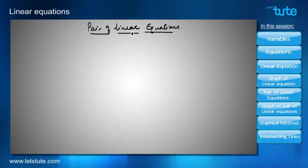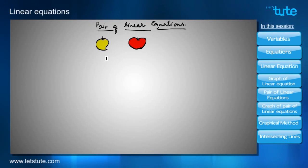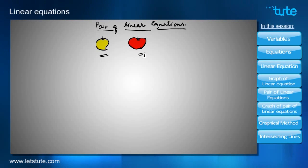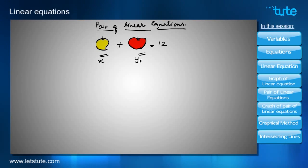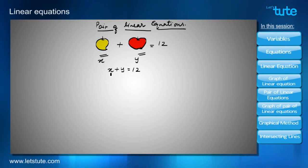To understand this, let's consider a situation: I went to a fruit shop and bought one mango and one apple. The shopkeeper charged me 12 rupees for both. Thinking about their individual prices, I assumed the price of one mango as X rupees and one apple as Y rupees. So the total expense is X plus Y equals 12.